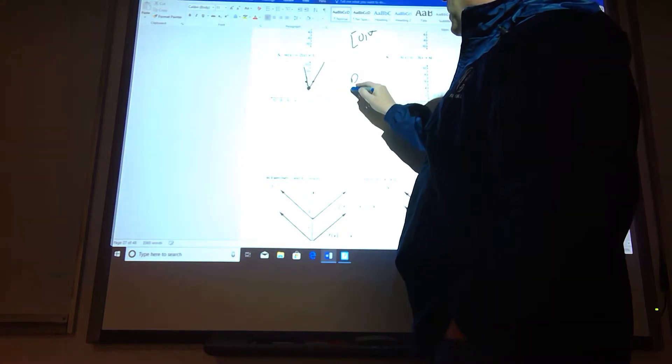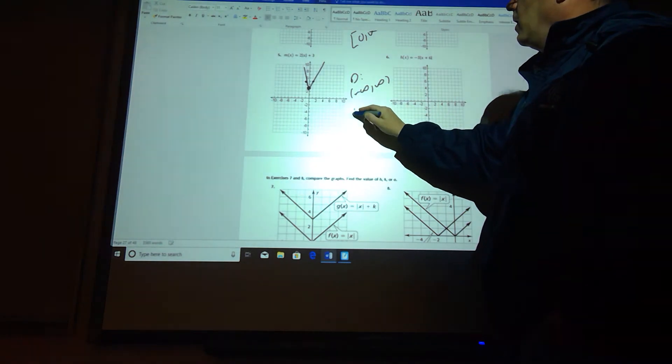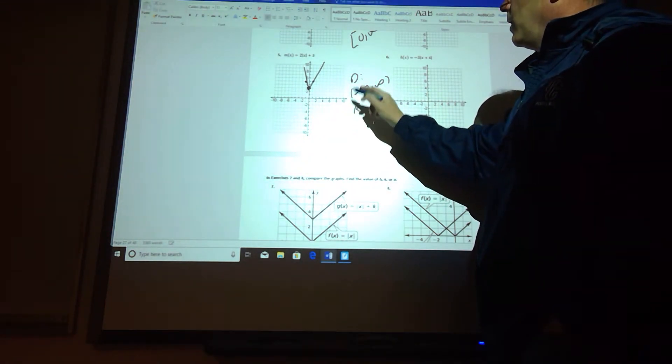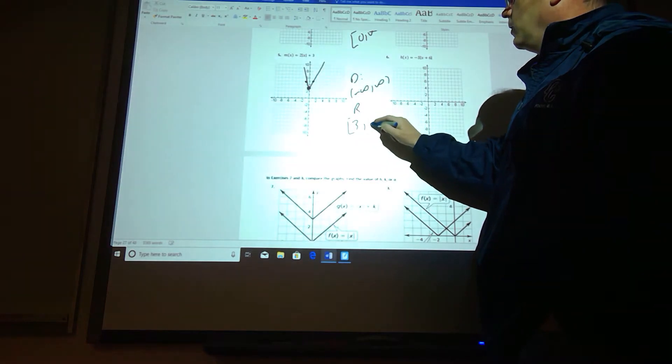Our domain will go from negative to positive infinity, and our range will go from the 3, including it, so square bracket, to infinity.